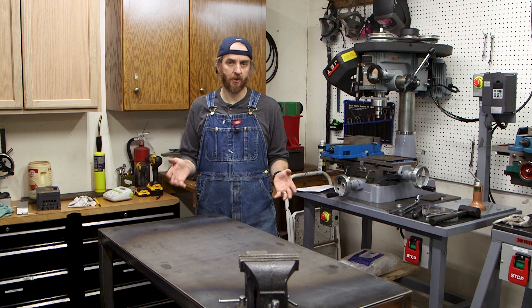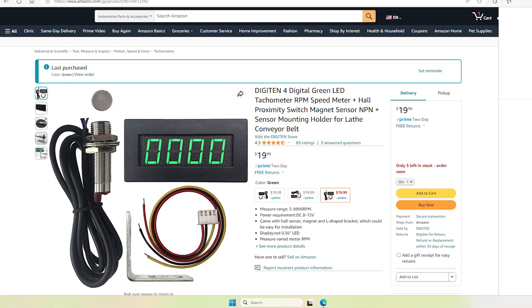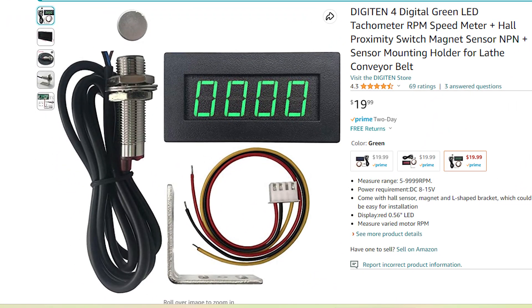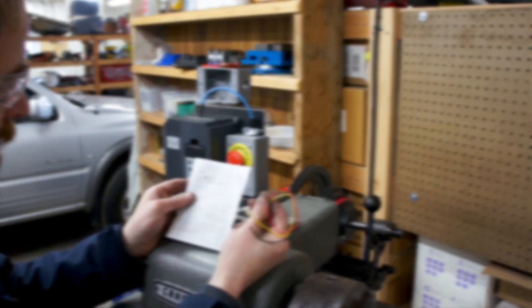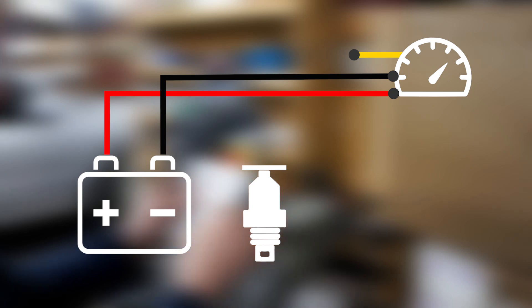I'm using one of those cheap tachometers I got on Amazon. This one came with a tachometer, a wiring harness, a pickup sensor and a magnet. So according to these instructions red is DC positive, black is DC negative and yellow is the signal wire. And then on the pickup sensor brown is positive, blue is negative and black is the signal wire.